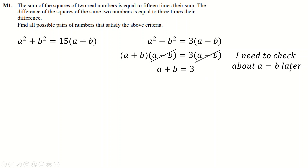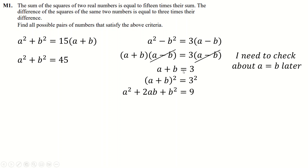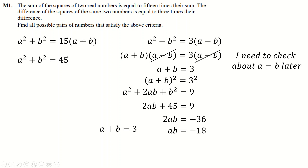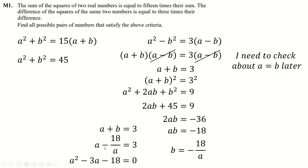If a minus b equals zero, that means a equals b — we'll check that later. For now we cancel and end up with a plus b equals three. If you square both sides and substitute a squared plus b squared equals 45, then take away and divide by two, you get two simple equations. Rearranging into a quadratic and factorizing, you get a equals six or a equals minus three.